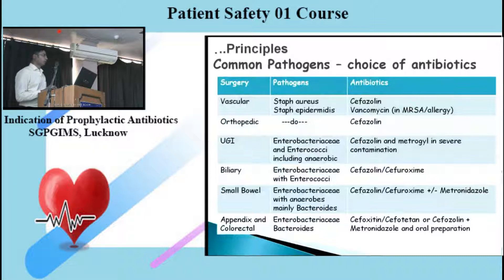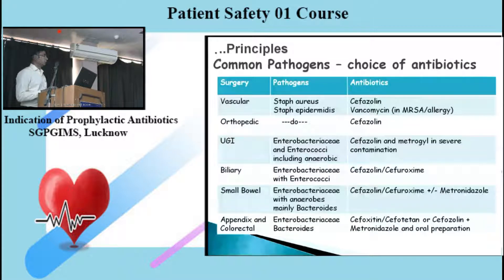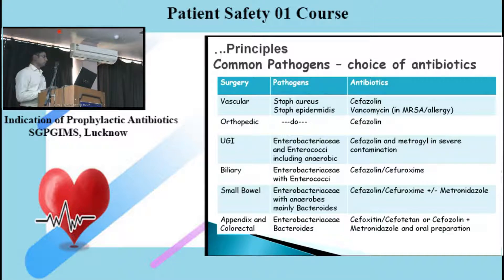The CDC-proposed antibiotic choices for various surgeries: for vascular and orthopedic surgeries, where the most common pathogen is Staph aureus or Staph epidermidis, the proposed antibiotics are cefazolin and vancomycin in cases of MRSA-proven centers or patients with allergy to beta-lactams. In upper GI surgery, where Enterobacteriaceae is most common, cefazolin is proposed and metronidazole can be added if there is severe contamination.